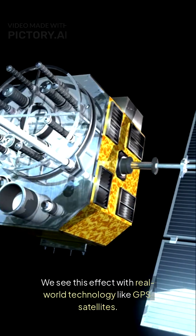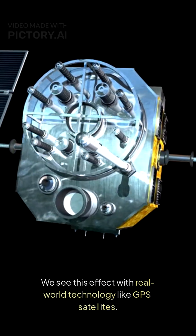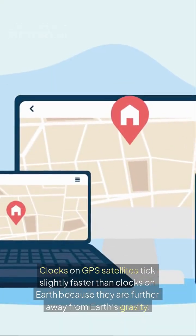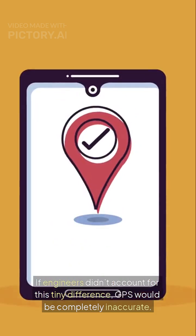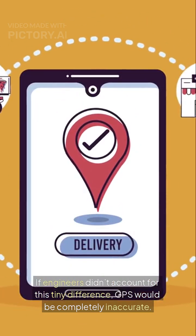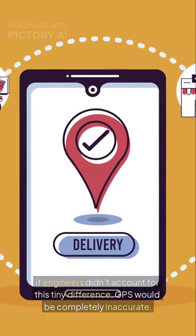We see this effect with real world technology like GPS satellites. Clocks on GPS satellites tick slightly faster than clocks on Earth because they are further away from Earth's gravity. If engineers didn't account for this tiny difference, GPS would be completely inaccurate.